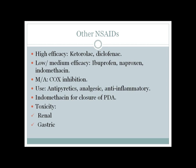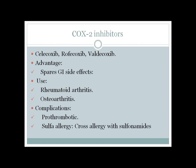COX-2 inhibitors include celecoxib, rofecoxib, and valdecoxib. As selective COX-2 inhibitors, they do not cause GI side effects, and renal side effects are reduced but still present. However, they are prothrombotic and can cause allergic reactions when used with sulfonamides.